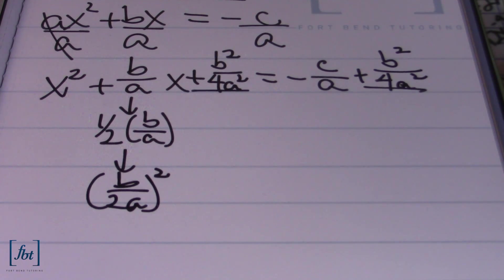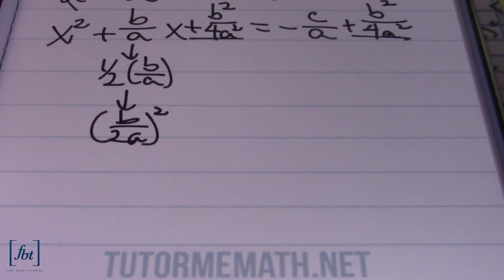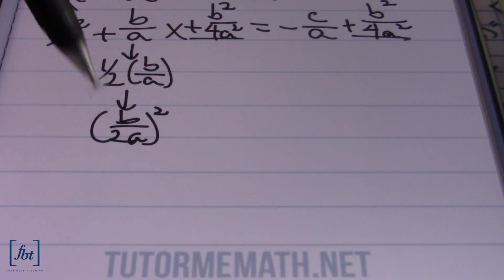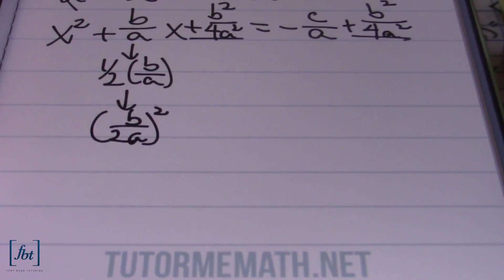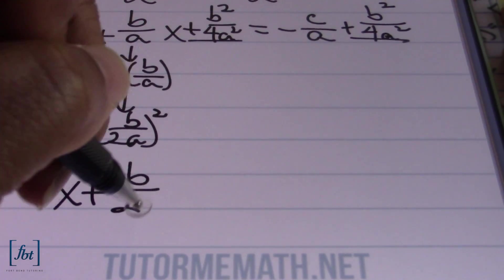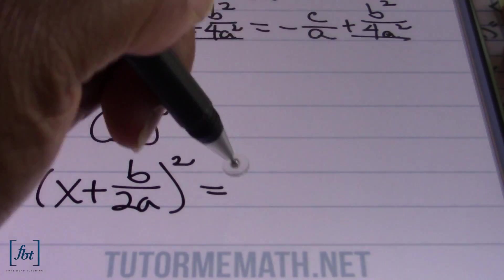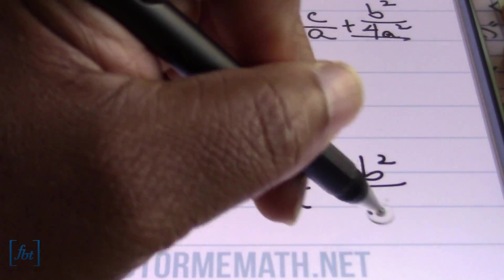Next, we're going to go ahead and factor this. Remember, what we're creating on the left side of the equal sign is a perfect square trinomial. The factorization is always going to be your variable x and whatever half of your middle term's coefficient was — and in this case, half of my middle term's coefficient was b divided by 2a. So the factorization of our left side is x plus b divided by 2a, squared, equals negative c divided by a plus b squared divided by 4a squared.